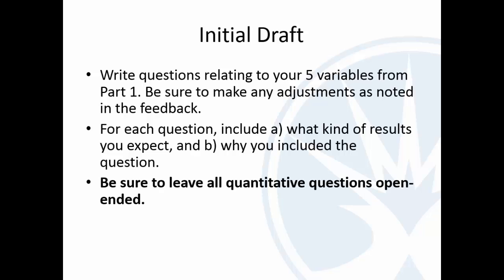This is really important: later on we're going to be calculating means, standard deviations, and linear correlation coefficients — things we learned in Chapter 3. In order to do that, we can't have classes of data for quantitative variables. So anything that's a number, you must leave open-ended. It's tough because we're so used to surveys that have you respond within a range and shade in a bubble, but we absolutely cannot do that here. We have to leave them open-ended.